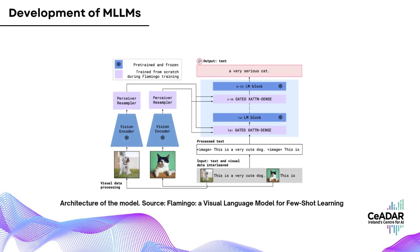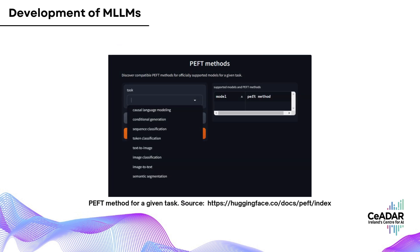A big breakthrough was the Flamingo model in 2022, which was one of the first to explore large-scale in-context learning for vision and language together. Right after that, visual instruction tuning became a key training approach, which basically uses Parameter Efficient Fine-Tuning techniques, or PEFT, to improve the LLM's performance in handling visual tasks.